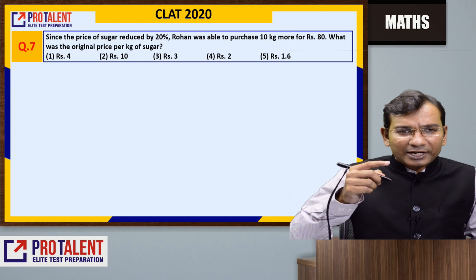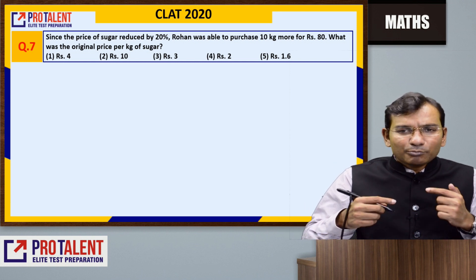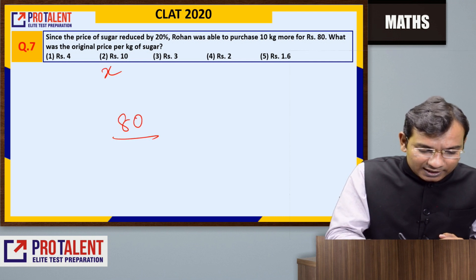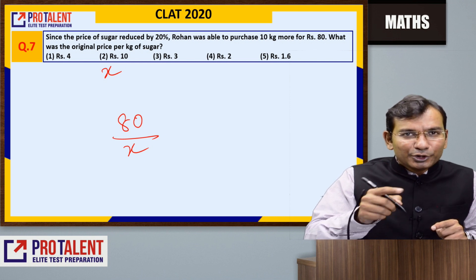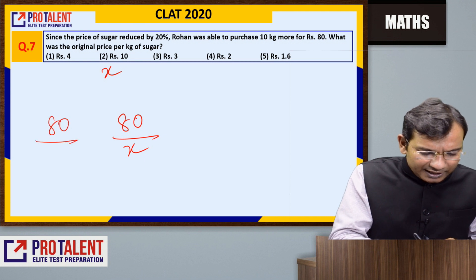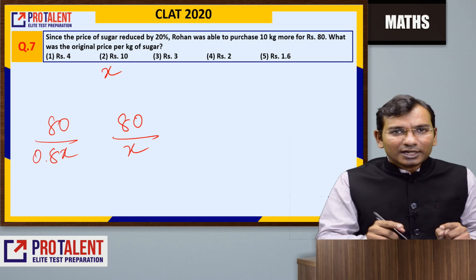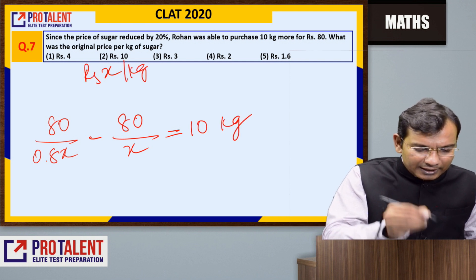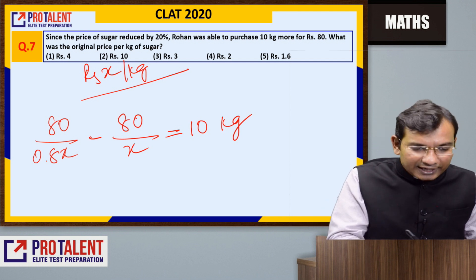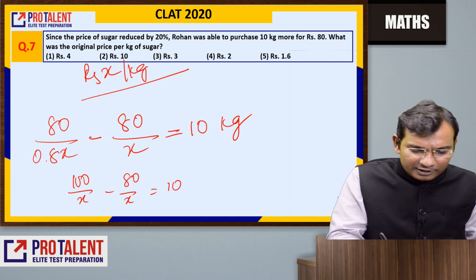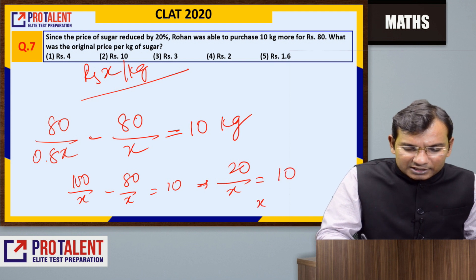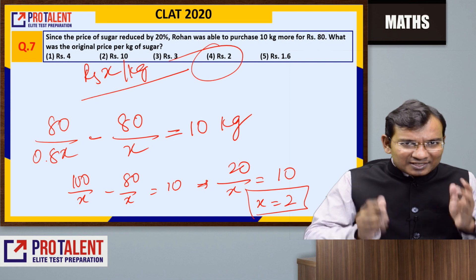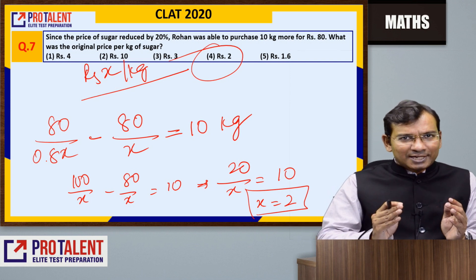Number 7: Price of sugar reduced by 20%, and Rohan was able to purchase 10 kg more for 80 rupees. What is the original price of sugar? Let original price = x. Original quantity = 80/x. New quantity = 80/(0.8x). Difference = 10 kg. So 100/x - 80/x = 10, which gives 20/x = 10, so x = 2. Original price is 2 rupees per kg. Easy, done in less than a minute.